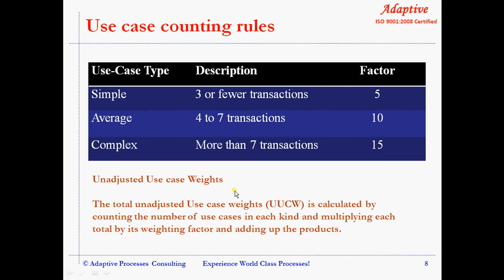Now let's understand use case counting rules. Individual use cases are categorized as simple, average, or complex, and weighted depending on the number of steps they contain, including alternative flows. A transaction is a set of activities which is either performed entirely or not at all. Use case type is simple for 3 or fewer transactions, with a factor of 5. Average for 4 to 7 transactions, with a factor of 10. Complex for more than 7 transactions, with a factor of 15.